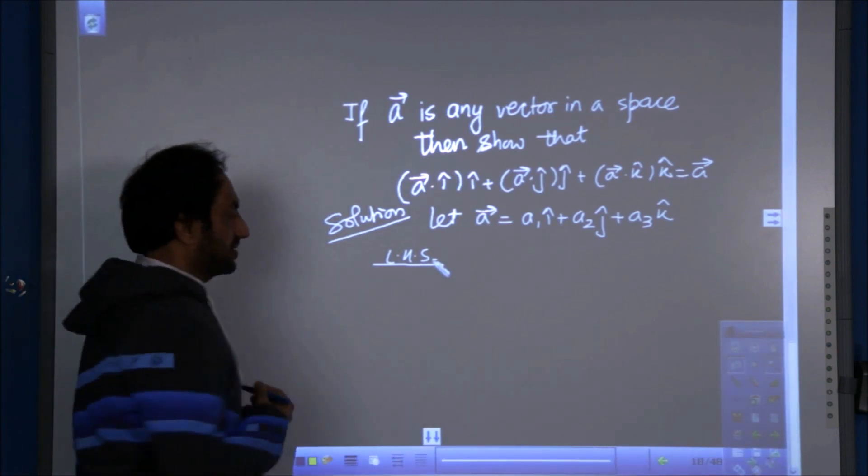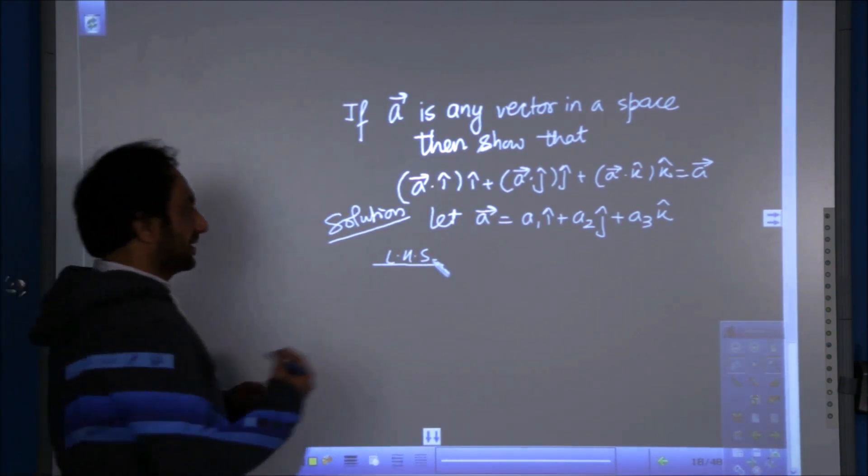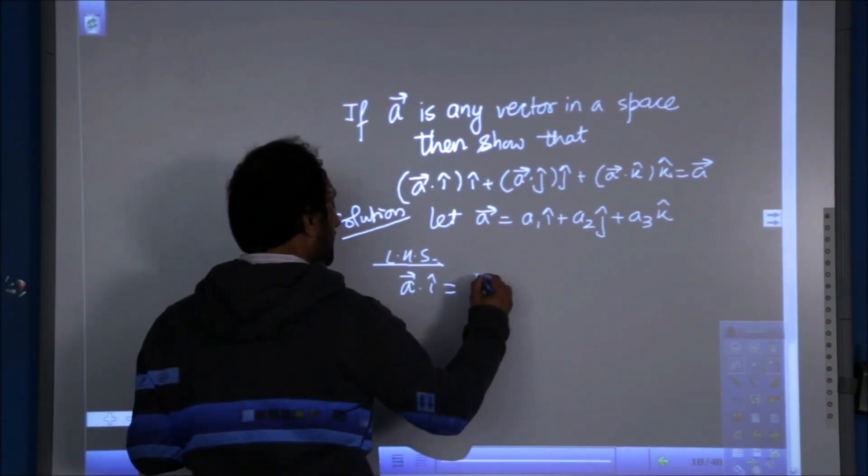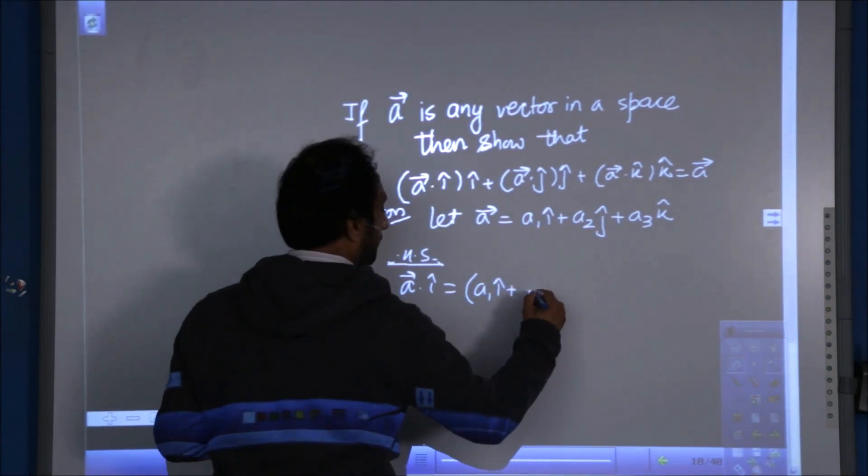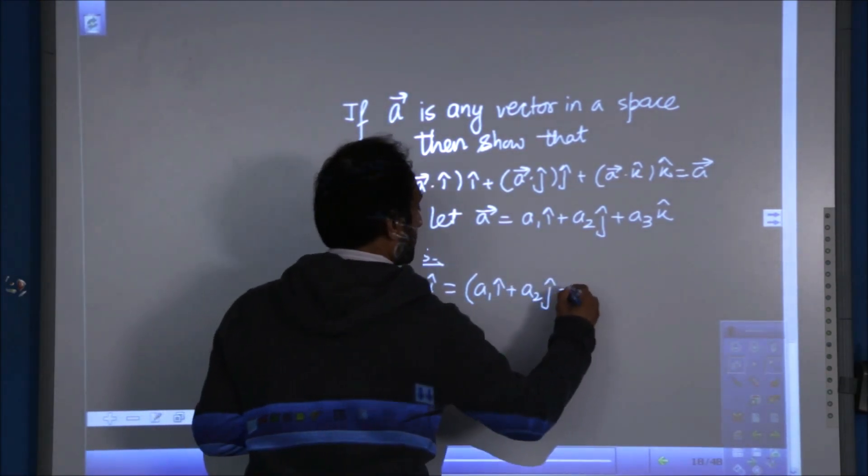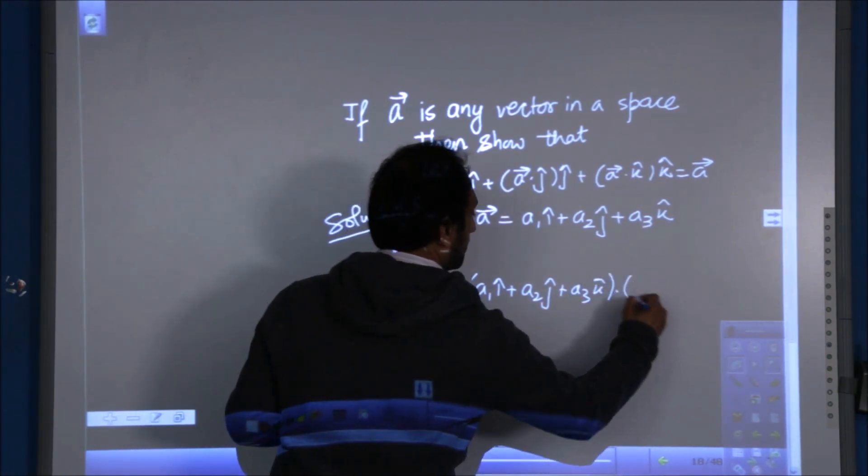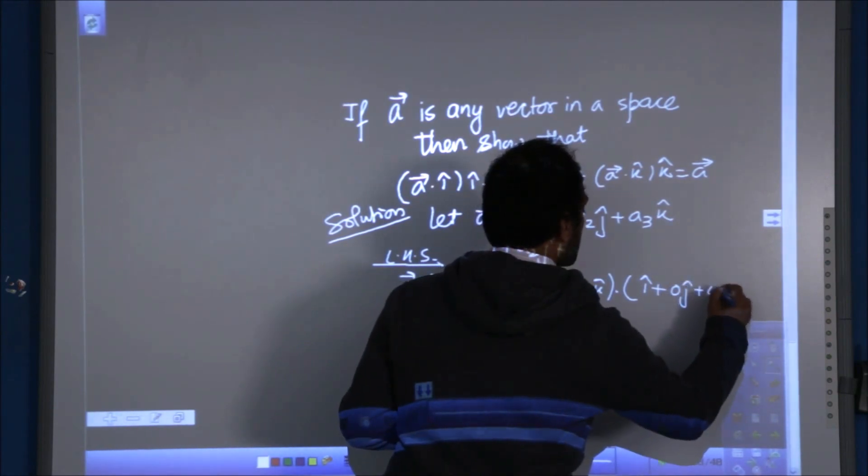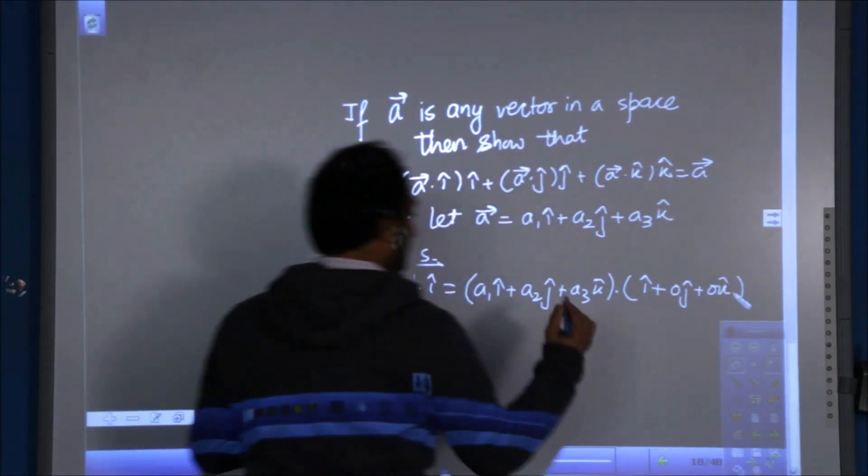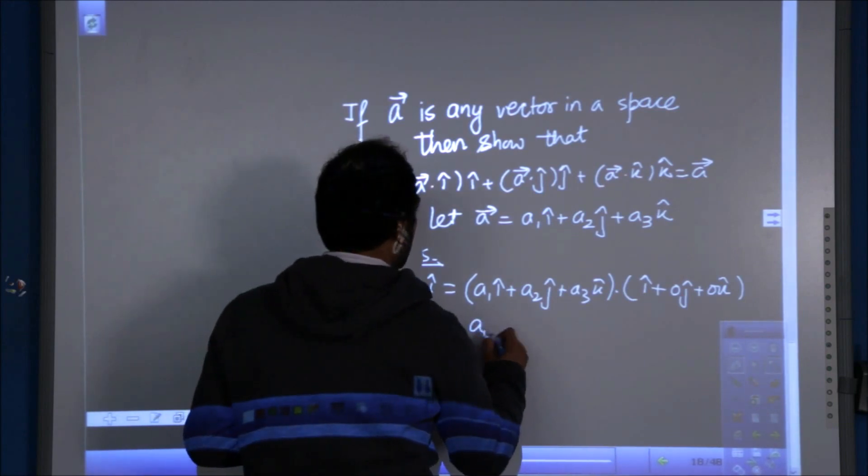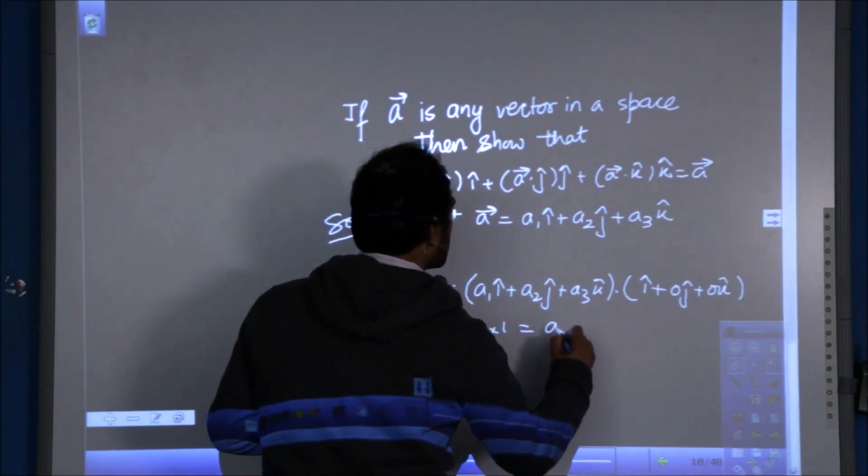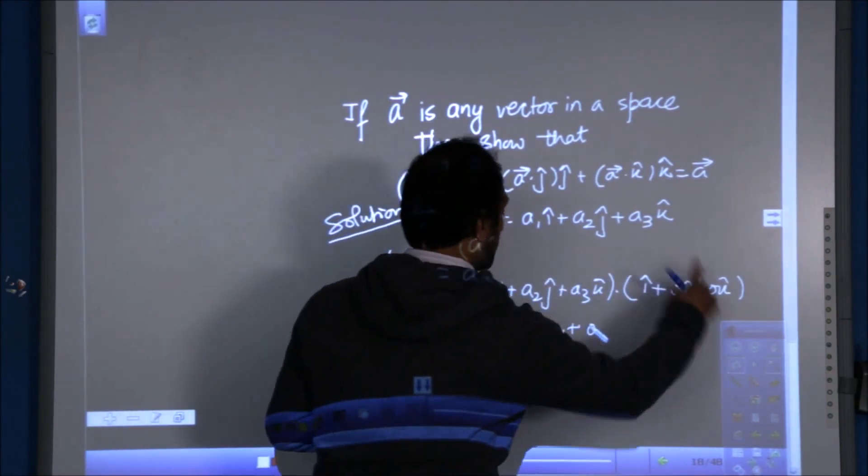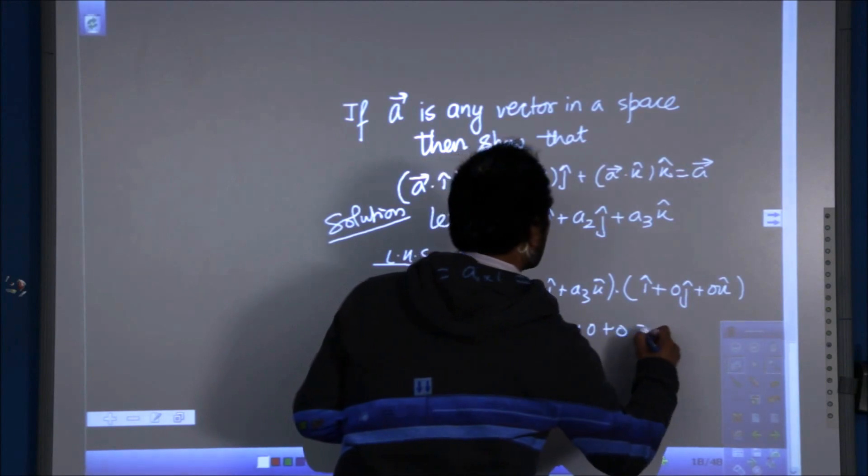Using the left hand side. What is the first part of the left hand side? That is a dot i. So when I take a dot i, i means i plus 0j plus 0k. So the result will only be a1 multiplied with 1, that is a1. Because rest of the terms will be 0, because a2 will be multiplied to 0 and a3 will be multiplied to 0. So it is simply a1.